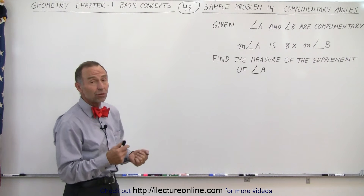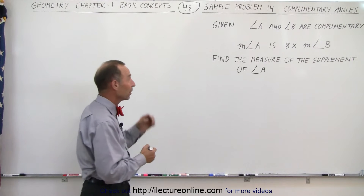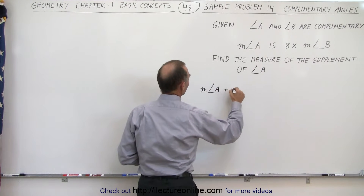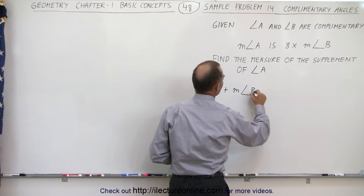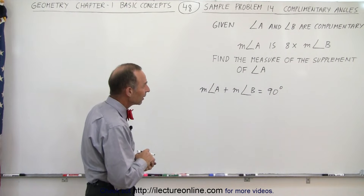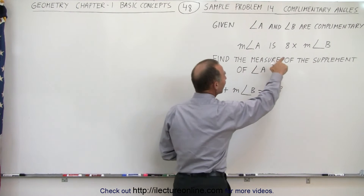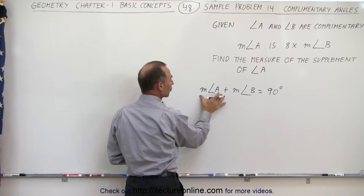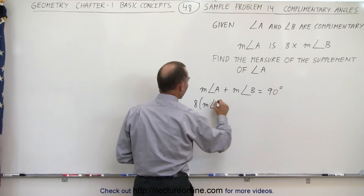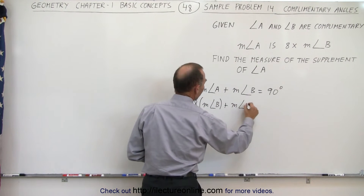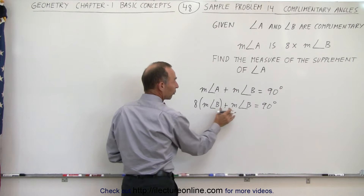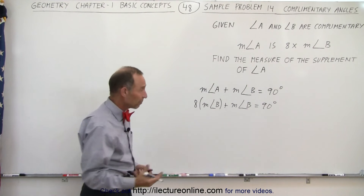First, what we're going to need to do is find the measure of angle A and the measure of angle B. We can say that the measure of angle A plus the measure of angle B is equal to 90 degrees. Since the measure of angle A is eight times the measure of angle B, we can replace angle A with eight times angle B. So eight times the measure of angle B plus one times the measure of angle B must be nine times the measure of angle B.